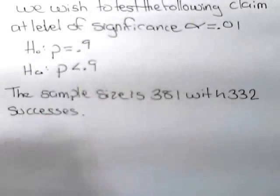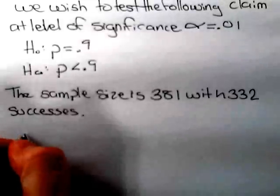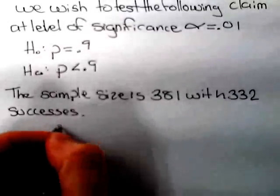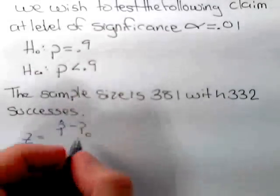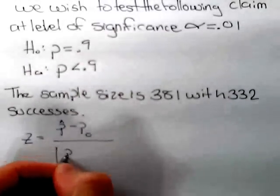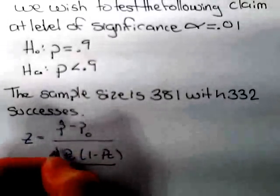We recognize that this is a one sample proportion test which has a test statistic of z equal to p hat, which is the sample proportion, minus what we're testing against, divided by the square root of p naught times 1 minus p naught over the sample size.